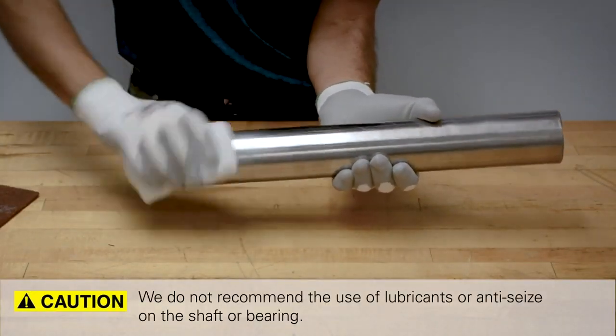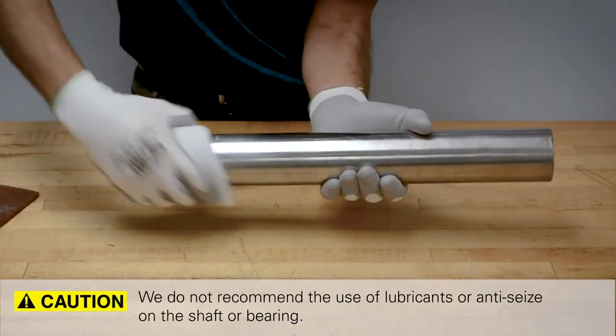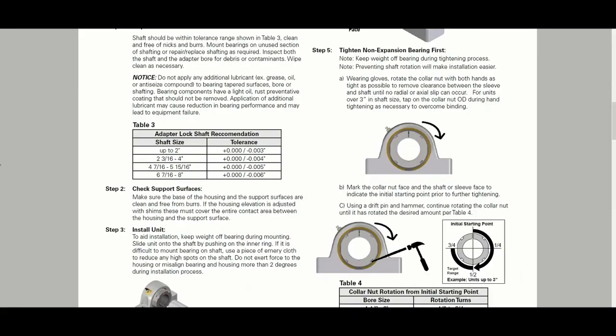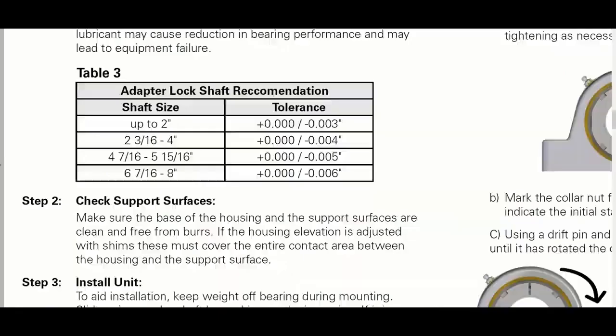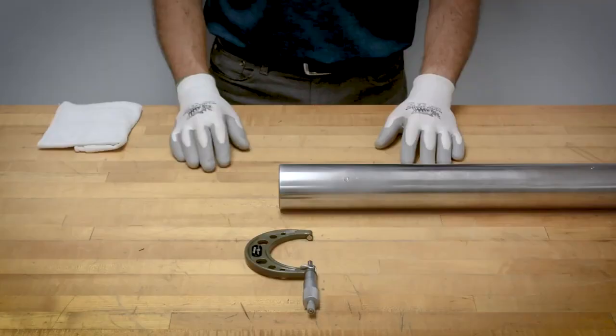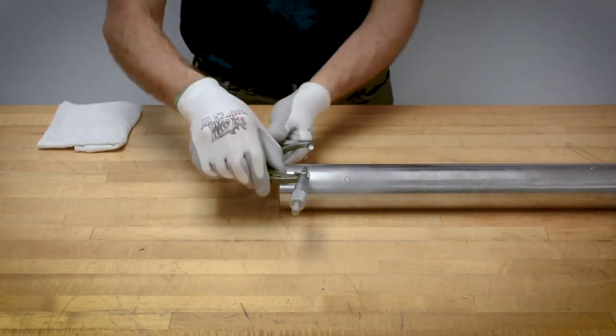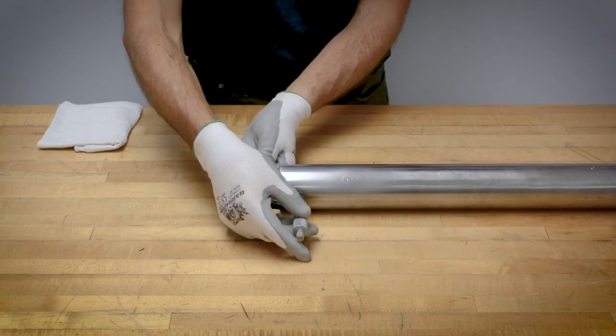We do not recommend the use of lubricants or anti-seize on the shaft or bearing. USRB clamp lock adapter lock is designed to be used with commercial shafting. Use a micrometer if necessary to ensure the shaft is within the tolerance shown.